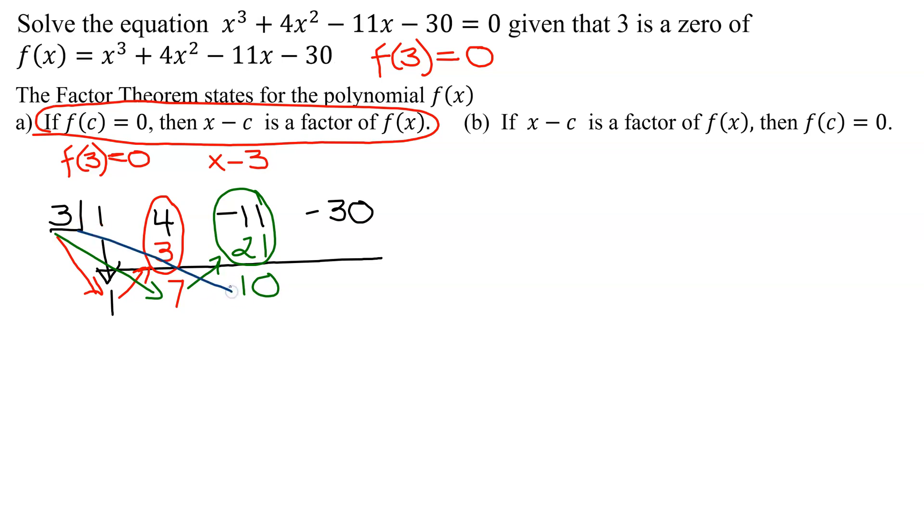Lastly, we have 3 times 10 is 30. Write the answer up here. Add these two numbers, -30 and 30, add up to 0.